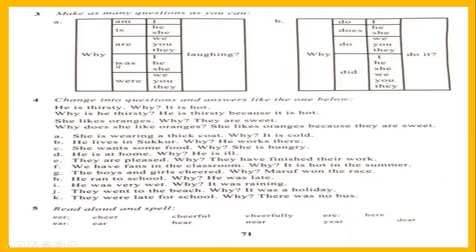For the past tense — time which has been passed — we use 'was.' With I, he, and she, we use 'was': why was I, why was he, why was she laughing? And for the plurals — we, you, they — the word 'were' will be used for the past tense: why were we, why were you, why were they laughing?